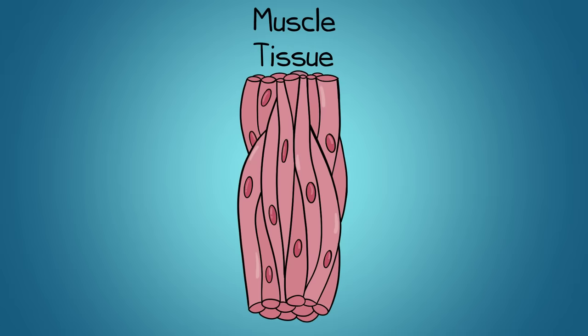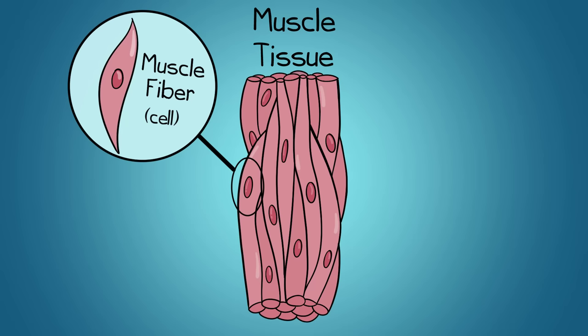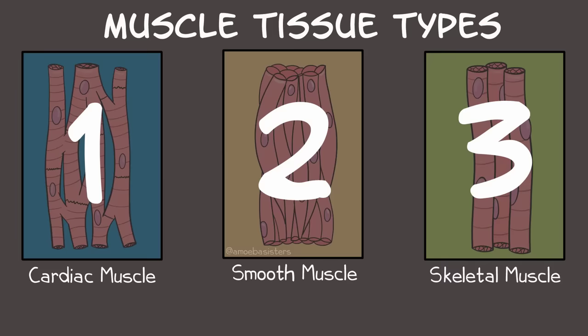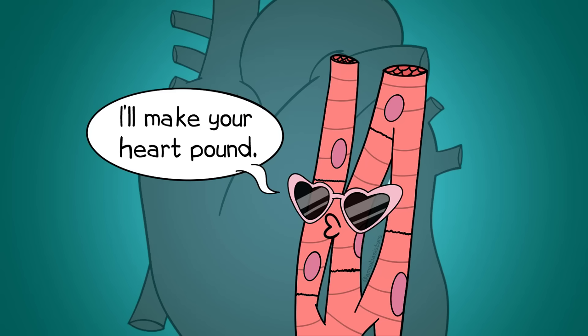Let's talk about muscle tissue. Muscle tissue is made up of muscle fibers. These fibers are the muscle cells, and they have structure that aids in their function. There are three types of muscle tissue we'll discuss.